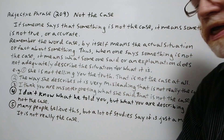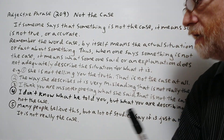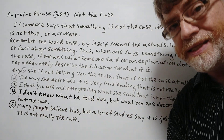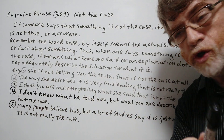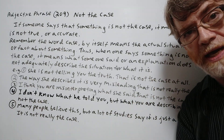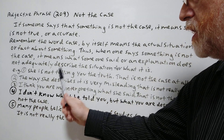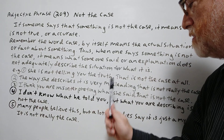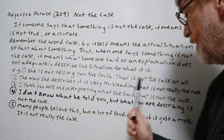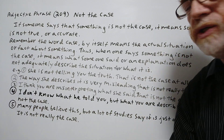We have five examples here to show just how it's used. Number one: 'She is not telling you the truth. That is not the case at all.' Number two: 'The way she describes it is very misleading. That is not really the case.'